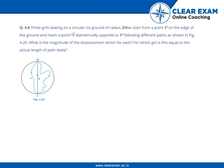The question is: three girls skating on a circular ice ground of radius 200 meters start from point P on the edge of the ground and reach a point Q diametrically opposite to P, following different paths as shown in figure 4.20. What is the magnitude of the displacement vector for each girl, and for which girl is this equal to the actual length of path skated?